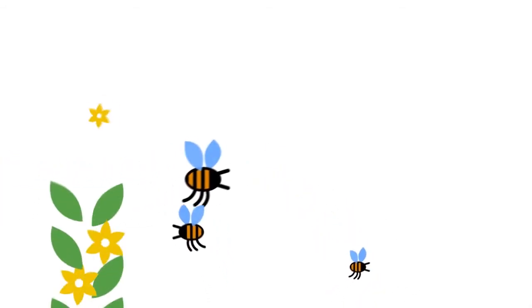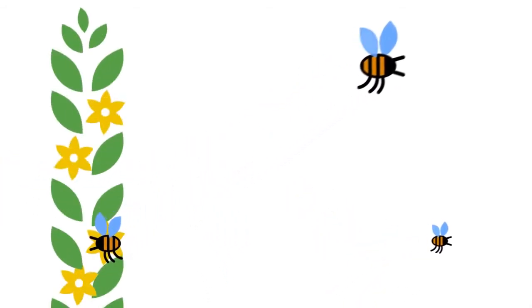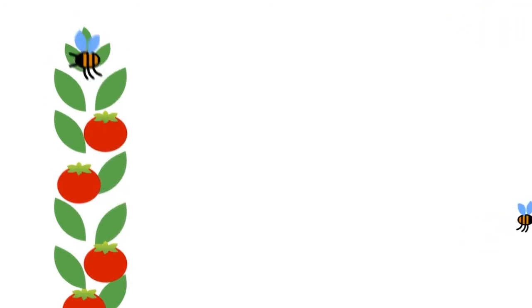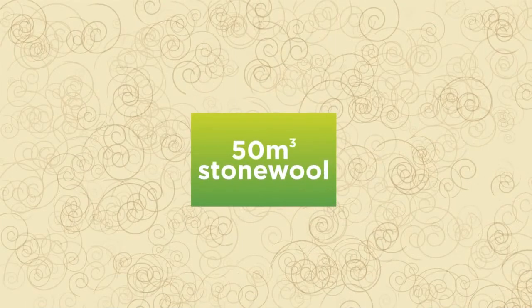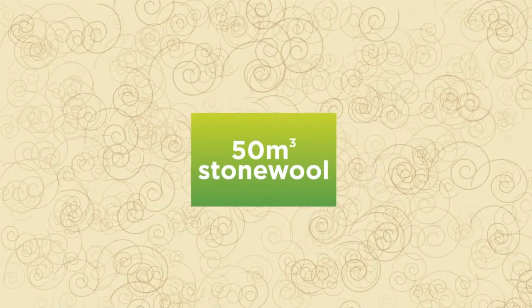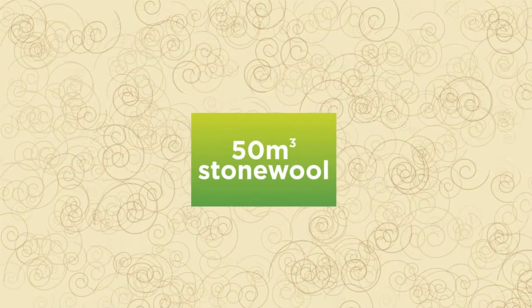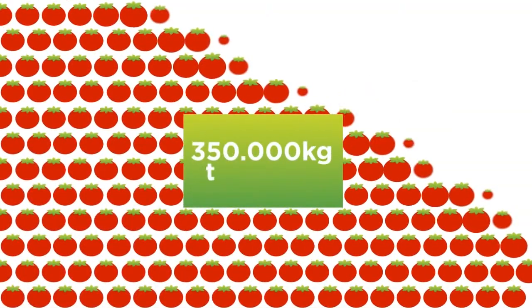Bumblebees fly around the greenhouses to pollinate the flowers so that the tomatoes can grow. One cubic meter of basalt is enough to be able to produce no less than 50 cubic meters of stone wool, and on those 50 cubic meters of stone wool we can grow 350,000 kilograms of tomatoes.